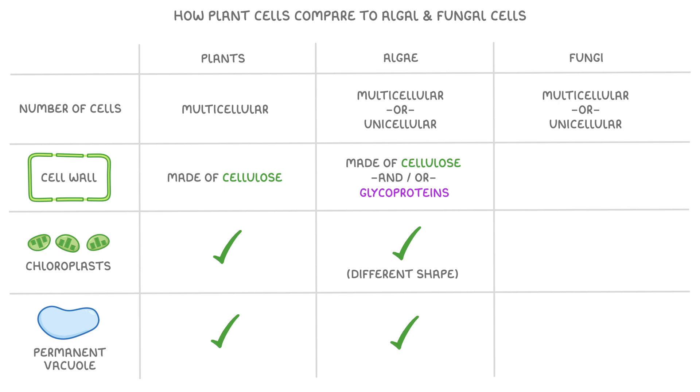Fungal cells are a little different because they've got cell walls, but they're made of chitin, not cellulose. And they also don't have chloroplasts because fungi don't perform photosynthesis. However, like plant and algal cells, fungal cells do have a large central vacuole.